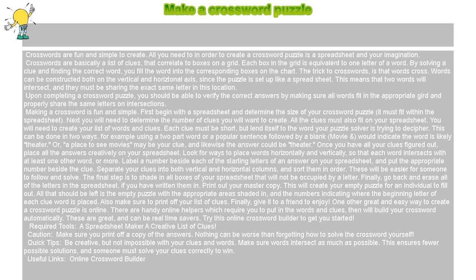You will need to create your list of words and clues. Each clue must be short, but lend itself to the word your puzzle solver is trying to decipher. This can be done in two ways: for example, using a two-part word or a popular sentence followed by a blank — "movie and and" would indicate the word is likely "theater." Or, "a place to see movies" may be your clue, and likewise the answer could be "theater."